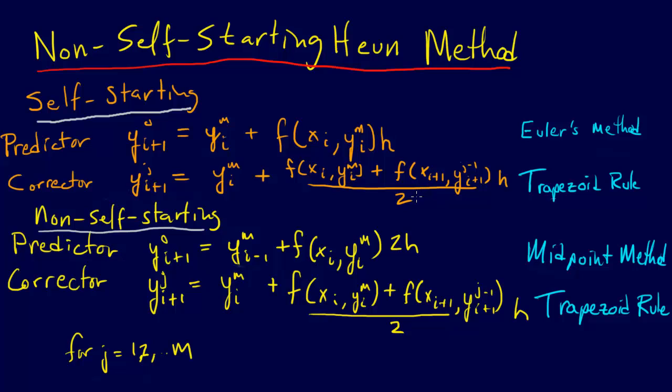if we just did the predictor and then the corrector and that was it, that would be an explicit method because you're just using one point, you're predicting the next point, end of story. But when you have this back and forth, which happens with iterative Heun's method, which we had mentioned earlier, when you have this back and forth, you have that iteration, that is what makes it an implicit method.